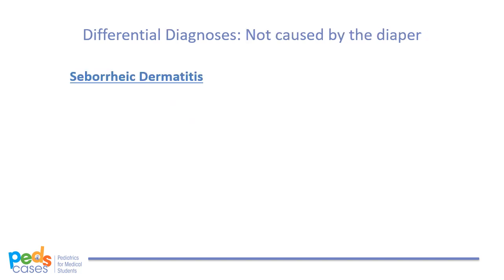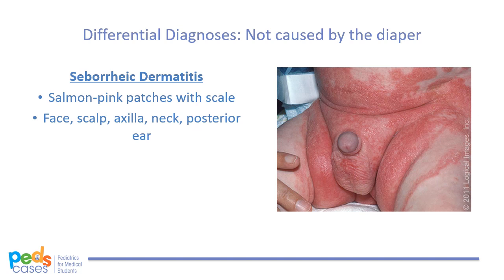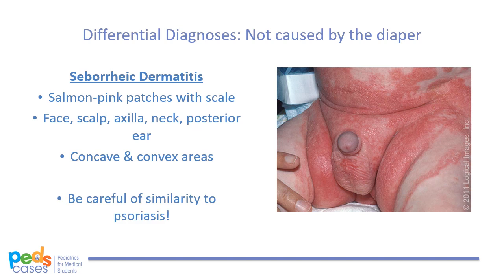Next, let's discuss the rashes that are not caused by the diaper. Seborrheic dermatitis is a common infant skin condition caused by sebaceous gland dysfunction. It presents with salmon pink patches with yellow scales on the face, scalp, and intertriginous areas such as the axilla, neck, and behind the ears. In the diaper area, it presents with salmon pink patches with a greasy scale involving both the convex and concave areas. It can be distinguished from irritant contact dermatitis by involvement of creases and its appearance on other body parts. Compared to candidiasis, it does not usually present with satellite lesions or pustules. However, it can be tricky to distinguish from psoriasis, so remember to think about both.